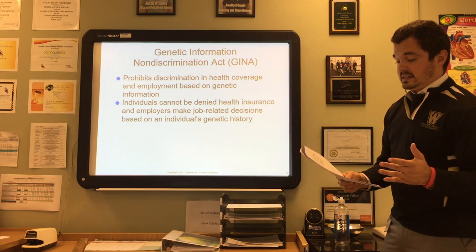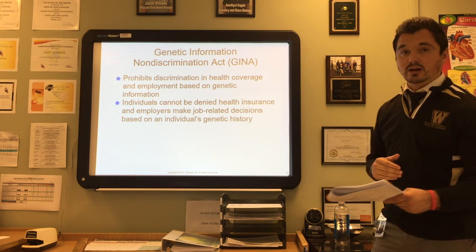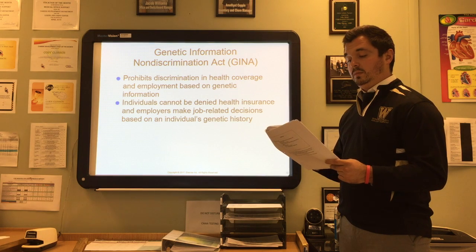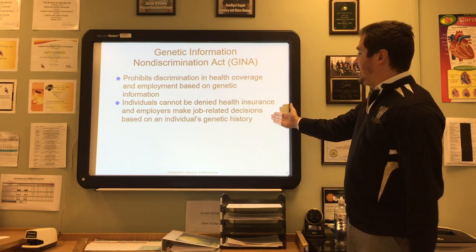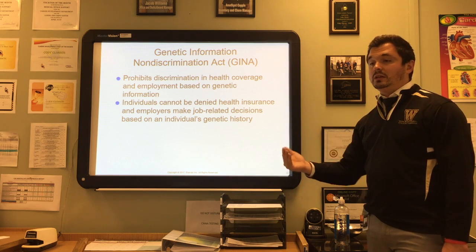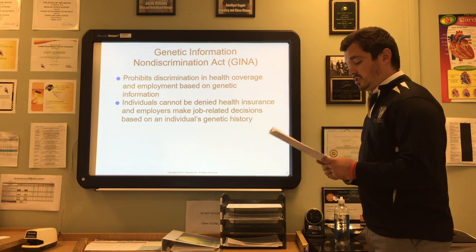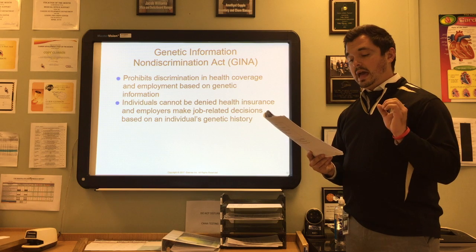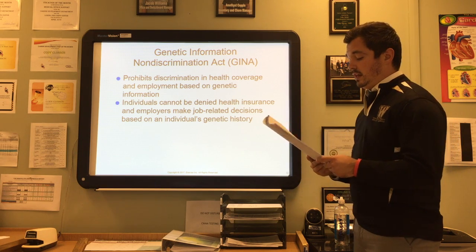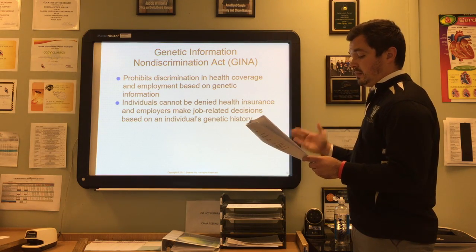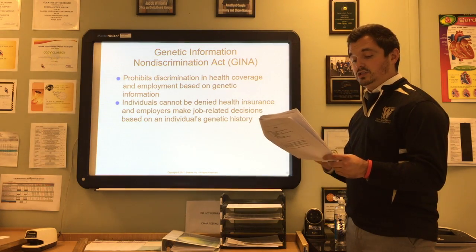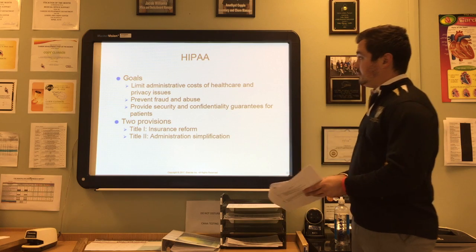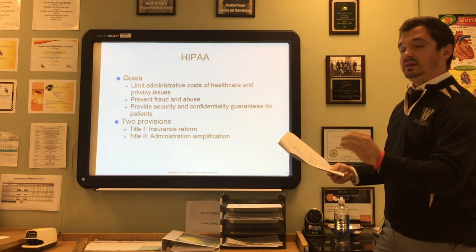The Genetic Information Nondiscrimination Act (GINA) was signed into law in 2008. It prohibits discrimination in health coverage and employment based on genetic information. Individuals cannot be denied health insurance, and employers must make job-related decisions based on the individual's genetic history. Many states already have laws protecting against genetic discrimination, but the degree of protection varies widely. All entities subject to GINA must comply with all applicable GINA requirements and may also need to comply with applicable protective state laws.